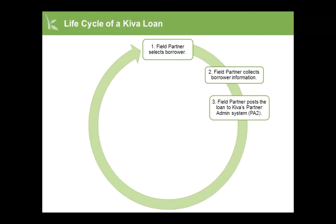You also need to obtain the borrower's written consent to be posted on Kiva's website. Once you have collected the borrower's information, you will post the loan in Kiva's partner admin system known as PA2. After you post the loan in PA2, Kiva volunteers will review the loan and then edit or translate it if necessary. The review process takes an average of seven days.